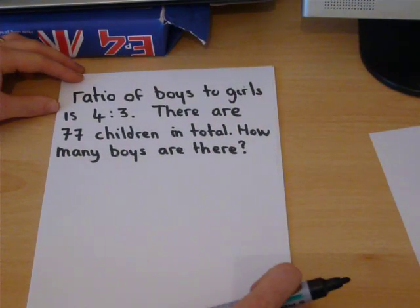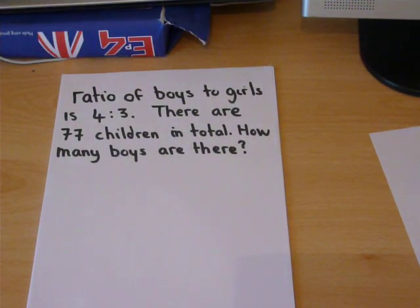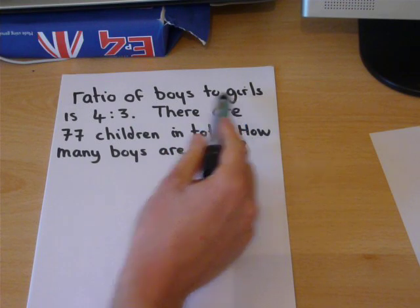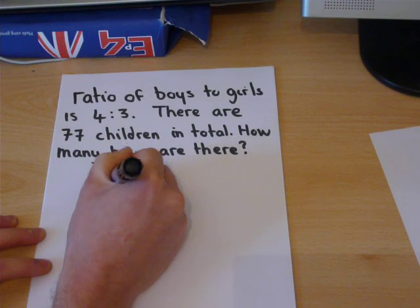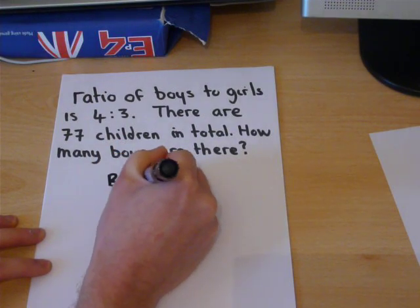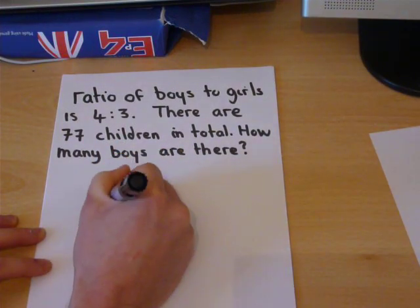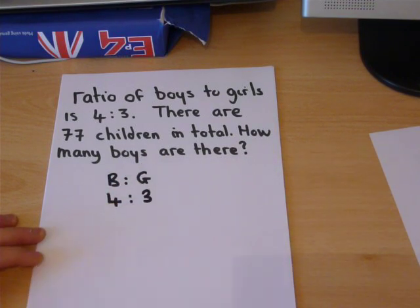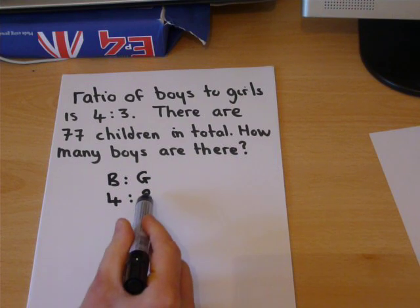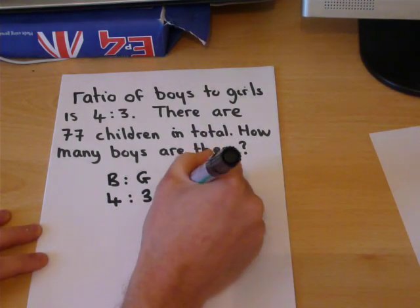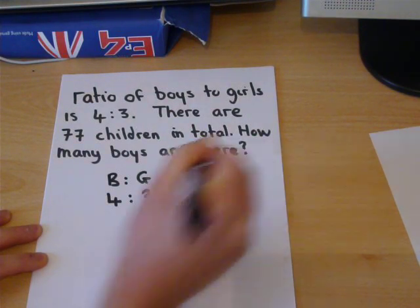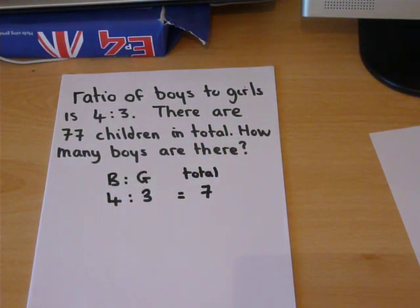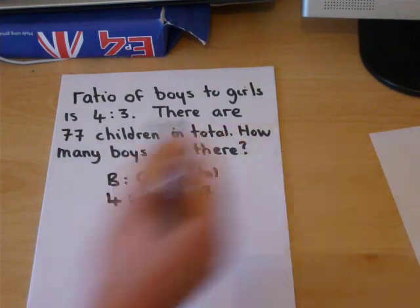In a similar way, suppose you are told the ratio of boys to girls is 4 to 3. So boys to girls is 4 to 3. In every group, so to speak, there are 4 boys and 3 girls, which makes a total of 7 per group. But there are 77 children in total.